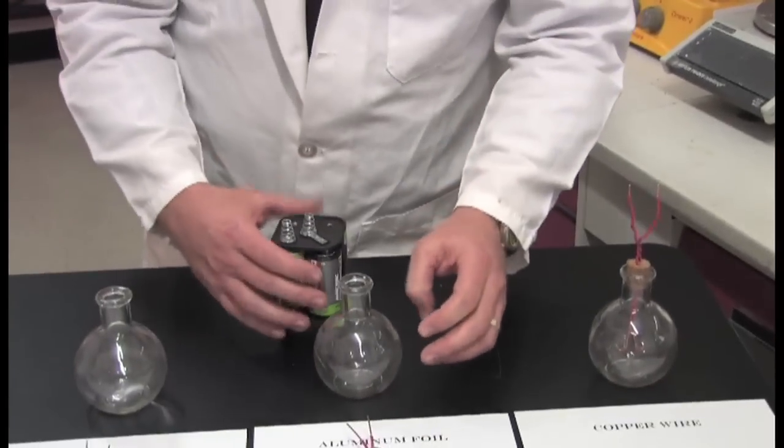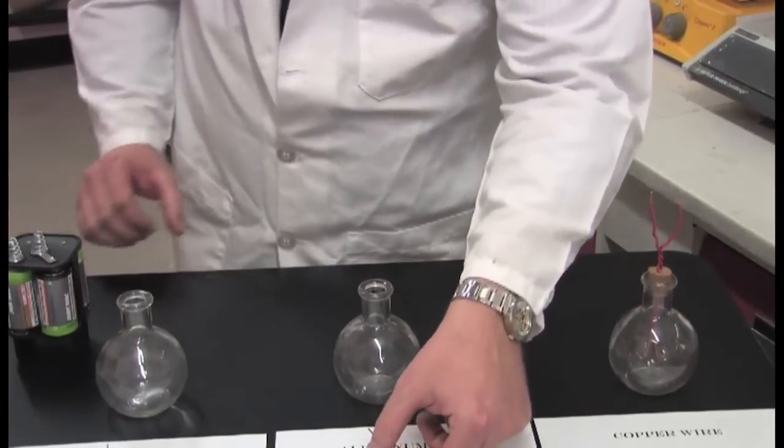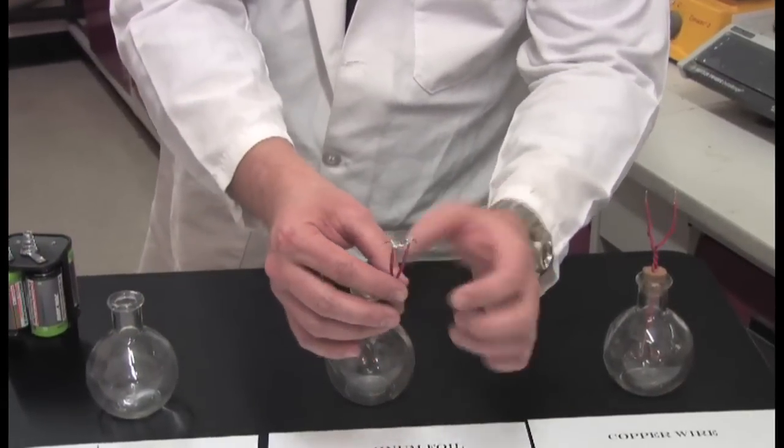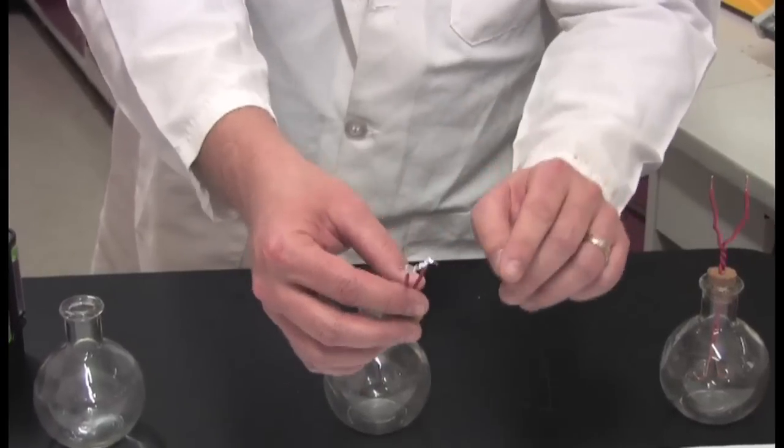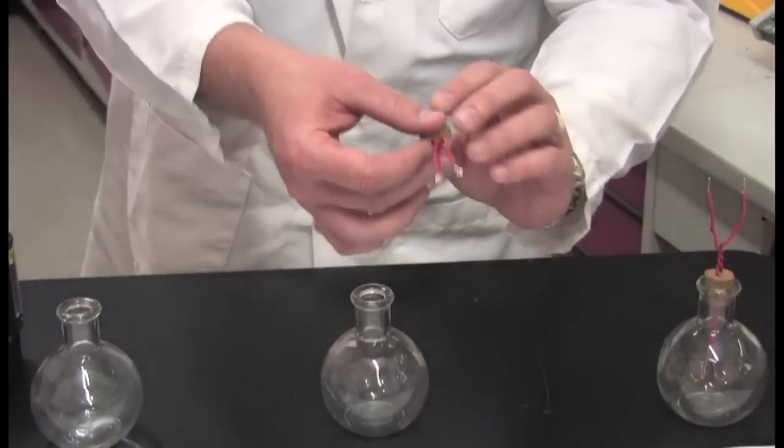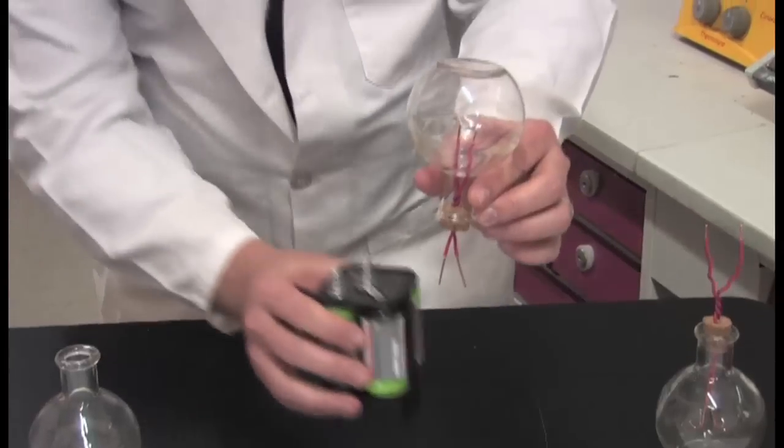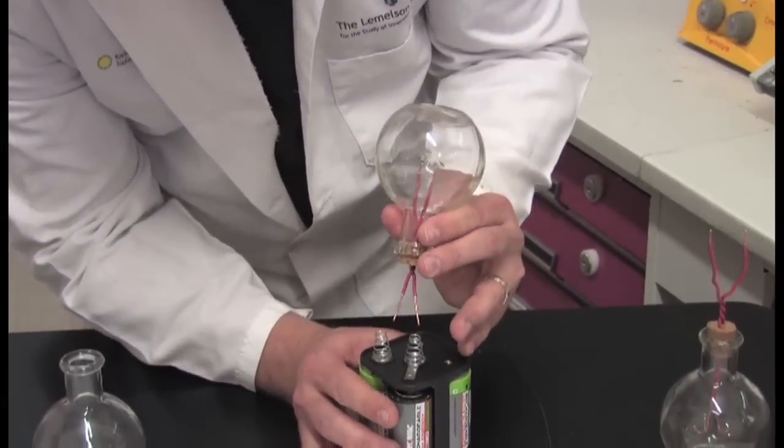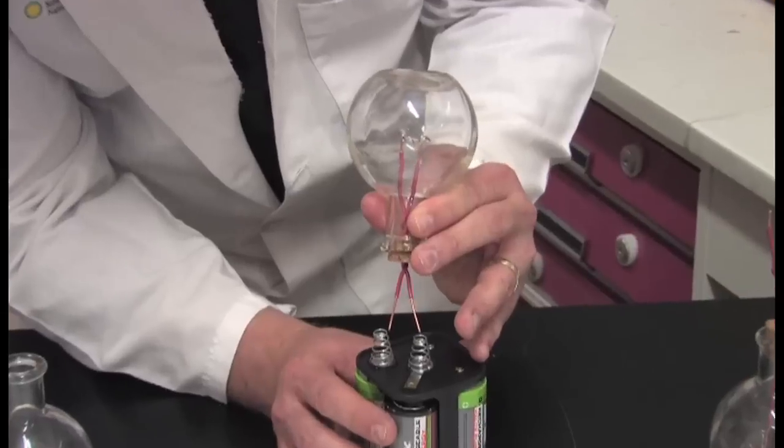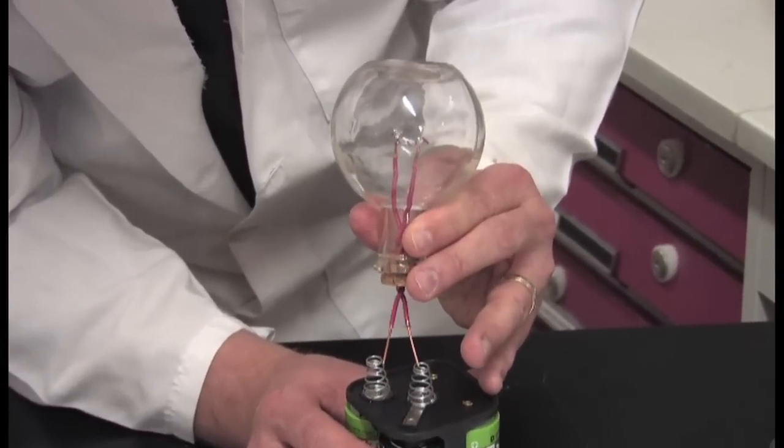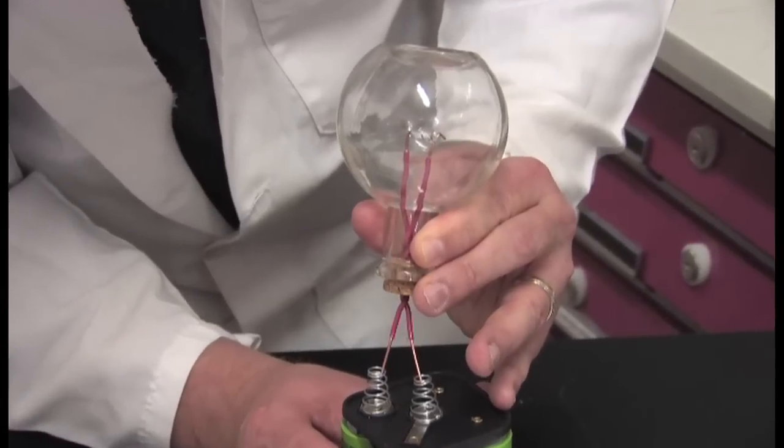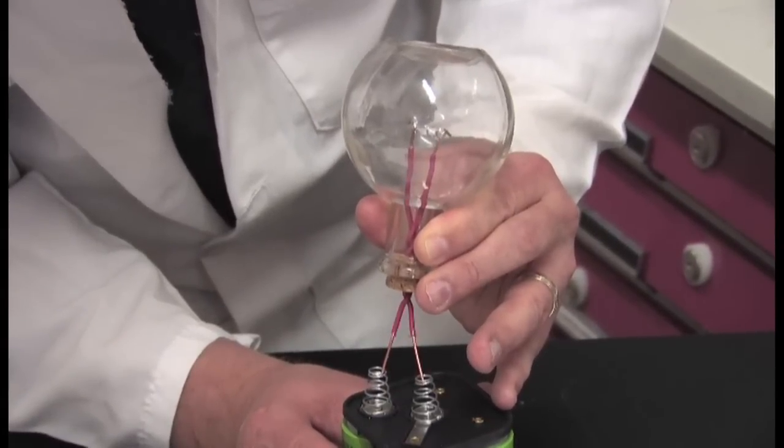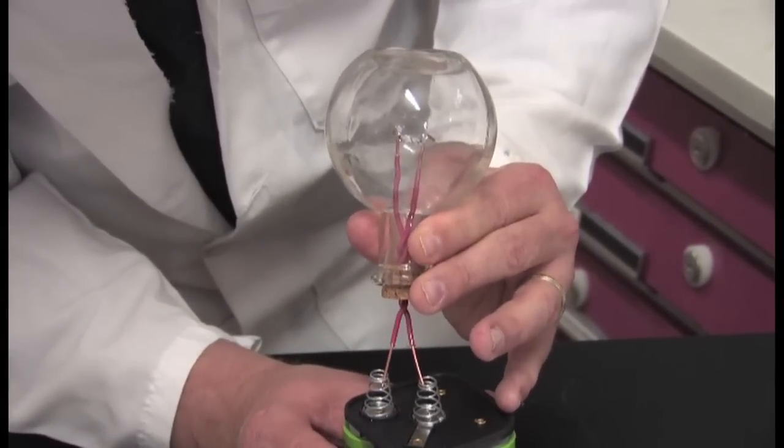So let's try our next sample here. It's an aluminum foil. So we've just cut a simple strip of aluminum foil like you have at home, and attached it across the wires here. Let's try this out. Let's just simply touch it to the battery, and still nothing seems to be happening.